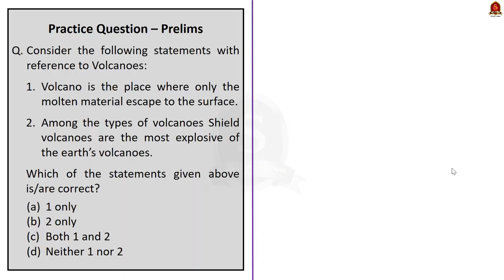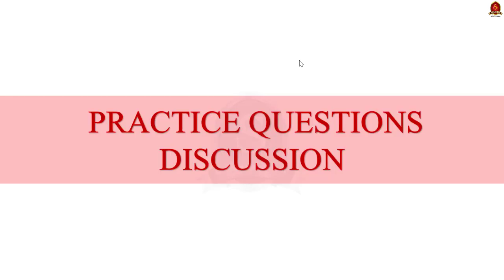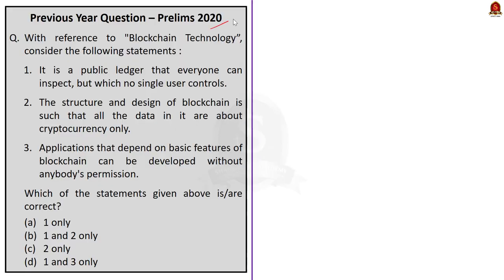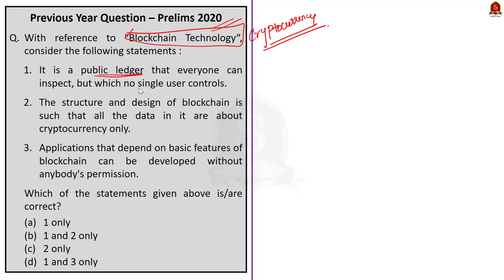Now let's discuss the answers for the prelims practice questions. The first question is from the 2020 prelims, with reference to blockchain technology. We discussed this term in the cryptocurrency section. Look at the first statement — it says it is a public ledger that everyone can inspect but which no single user controls. Yes, it is correct.